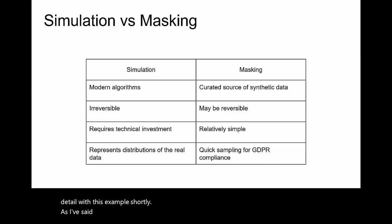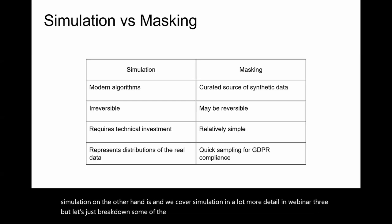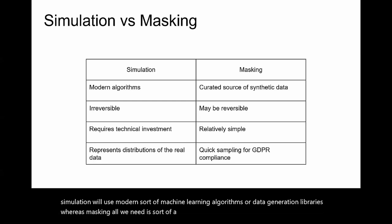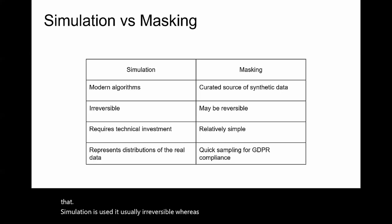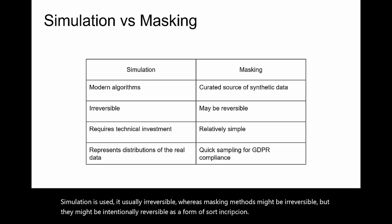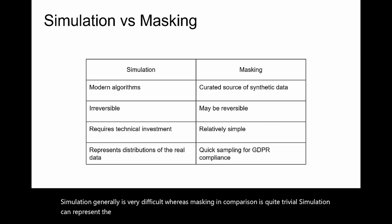Masking isn't a method of synthetic data or data synthesis. Simulation on the other hand is, and we cover simulation in more detail in webinar three. Simulation will use modern machine learning algorithms or data generation libraries, whereas masking just needs a curated source of data or some randomness to create new names, ages, or genders. Simulation is usually irreversible, whereas masking methods might be intentionally reversible as a form of encryption. Simulation is generally very difficult, whereas masking in comparison is quite trivial. Simulation can represent the full statistical spectrum of data, whereas masking is more of a low-effort sampling exercise.